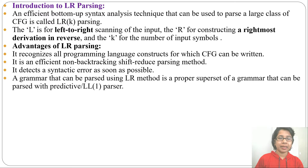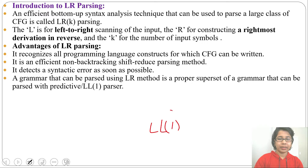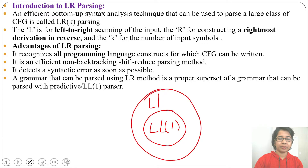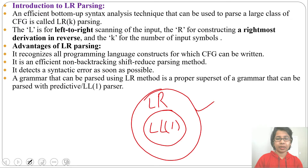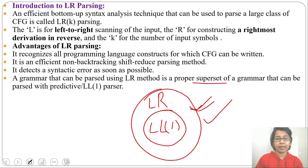Next advantage: a grammar that can be parsed using the LR method is a proper superset of grammar that can be parsed with a predictive, or LL1, parser. So in LR parsing we can parse more languages than LL1 parsing. LL1 is a subset of LR. Grammars that are LL1 can also be LR grammars, but LR grammars are not necessarily LL1 grammars.